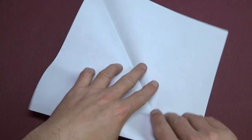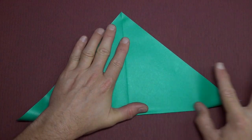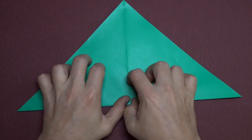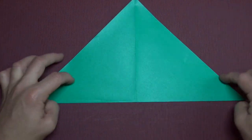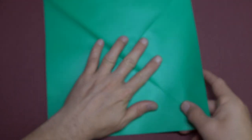Unfold and fold in half in this direction. If I'm going too fast, you can always pause the video or play it in slow-mo. Unfold and turn over.